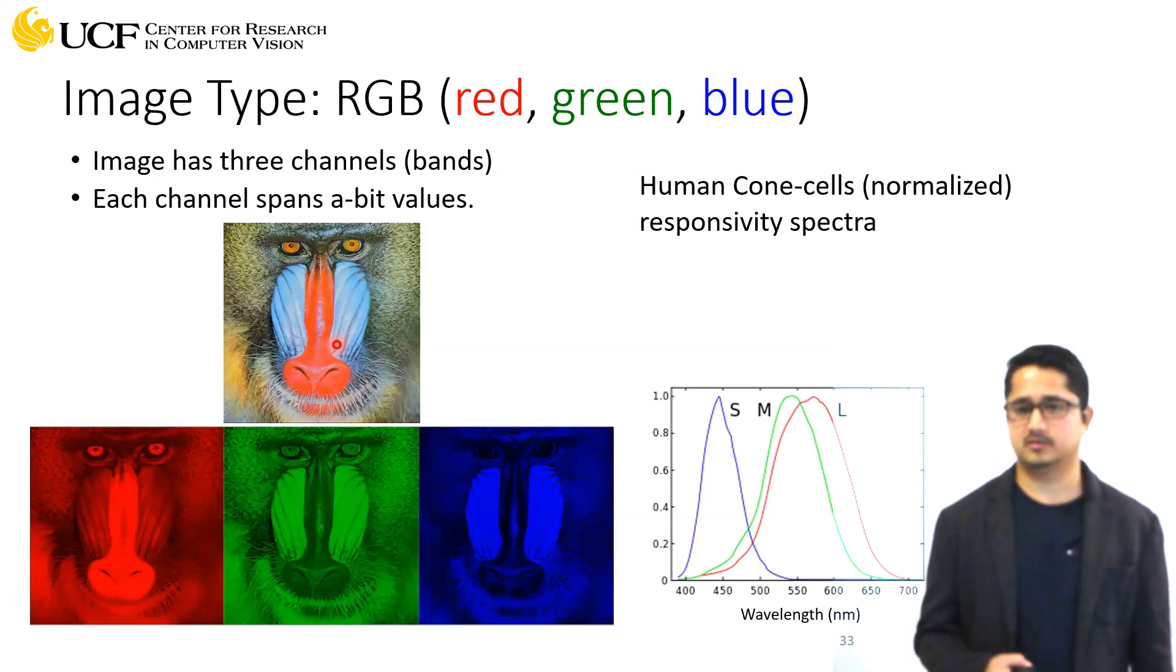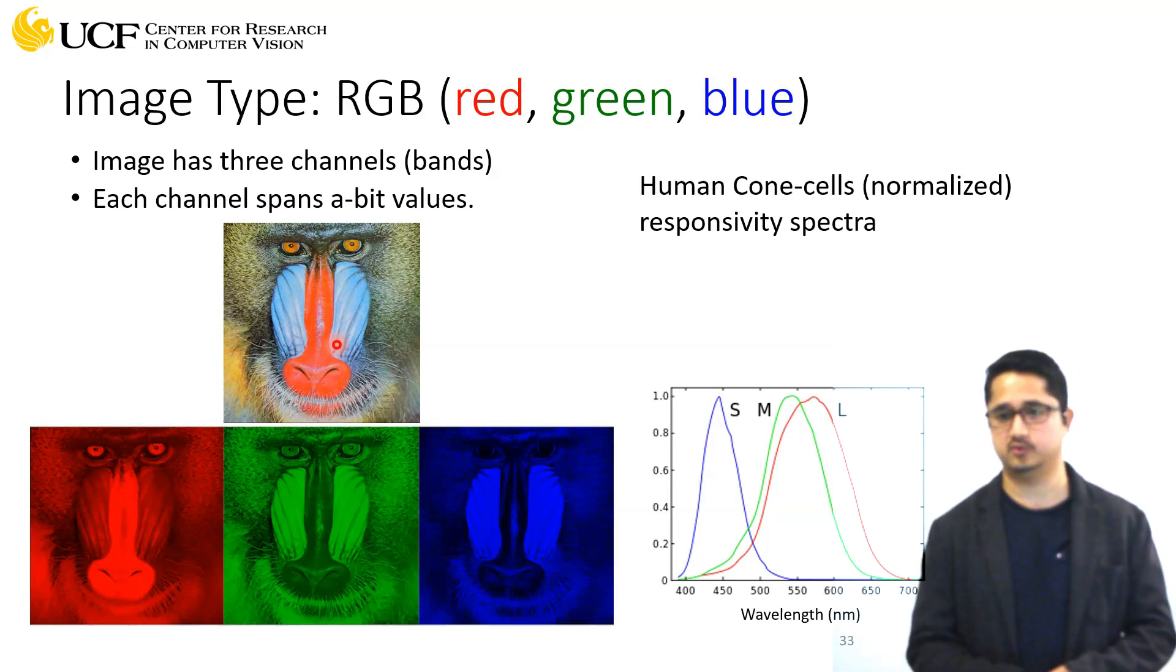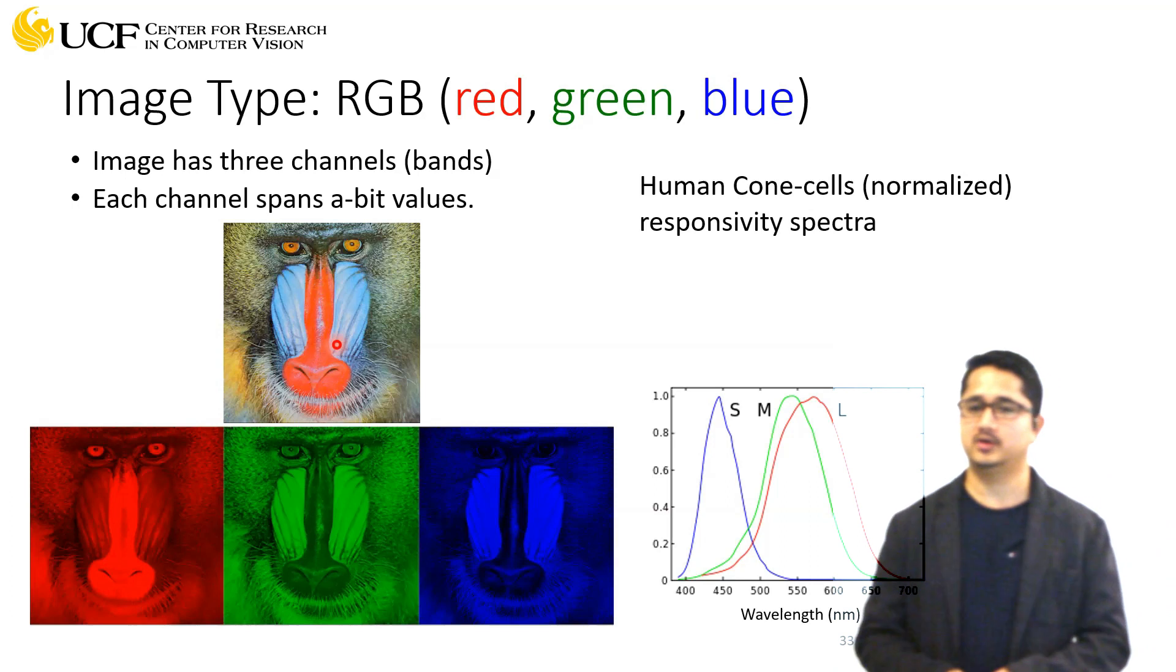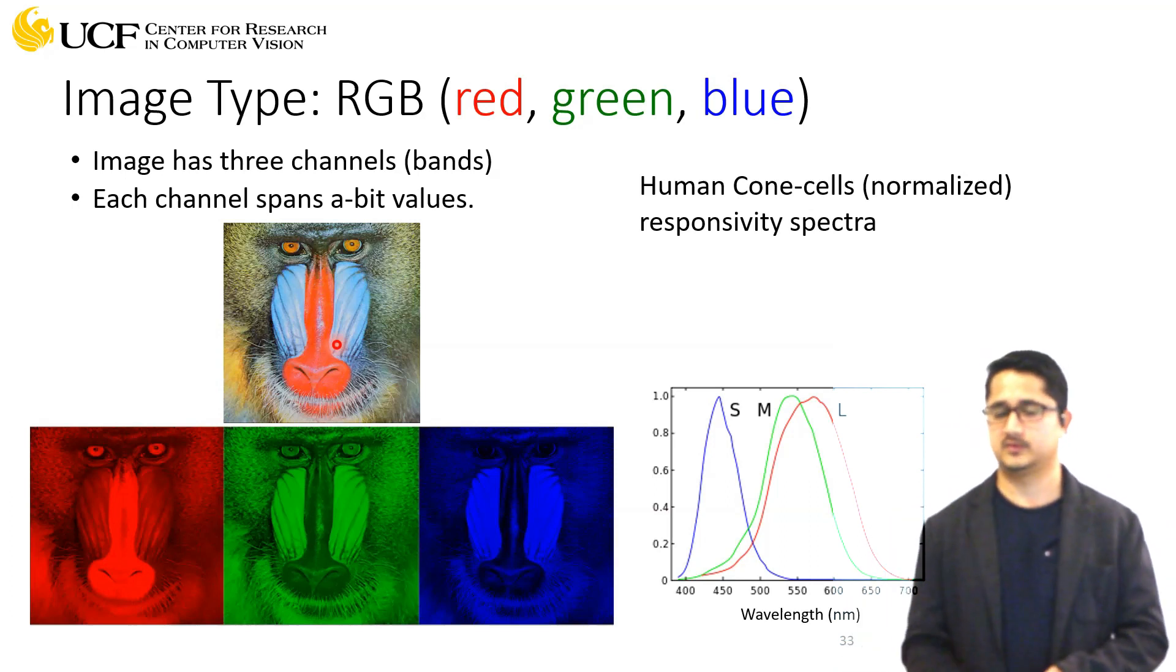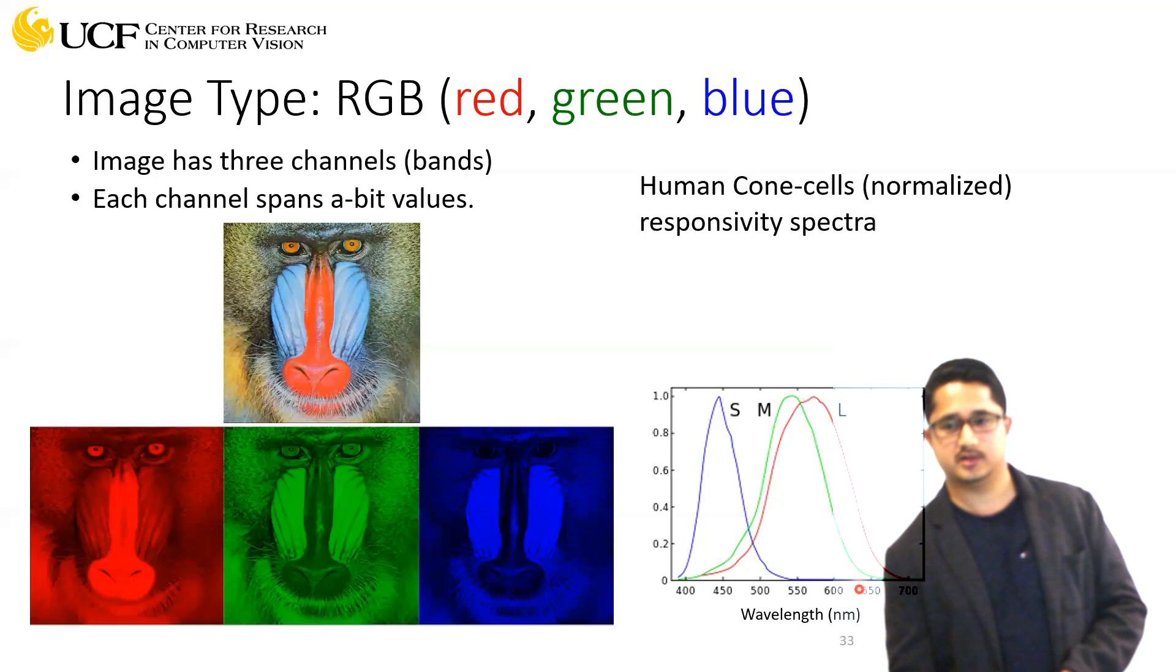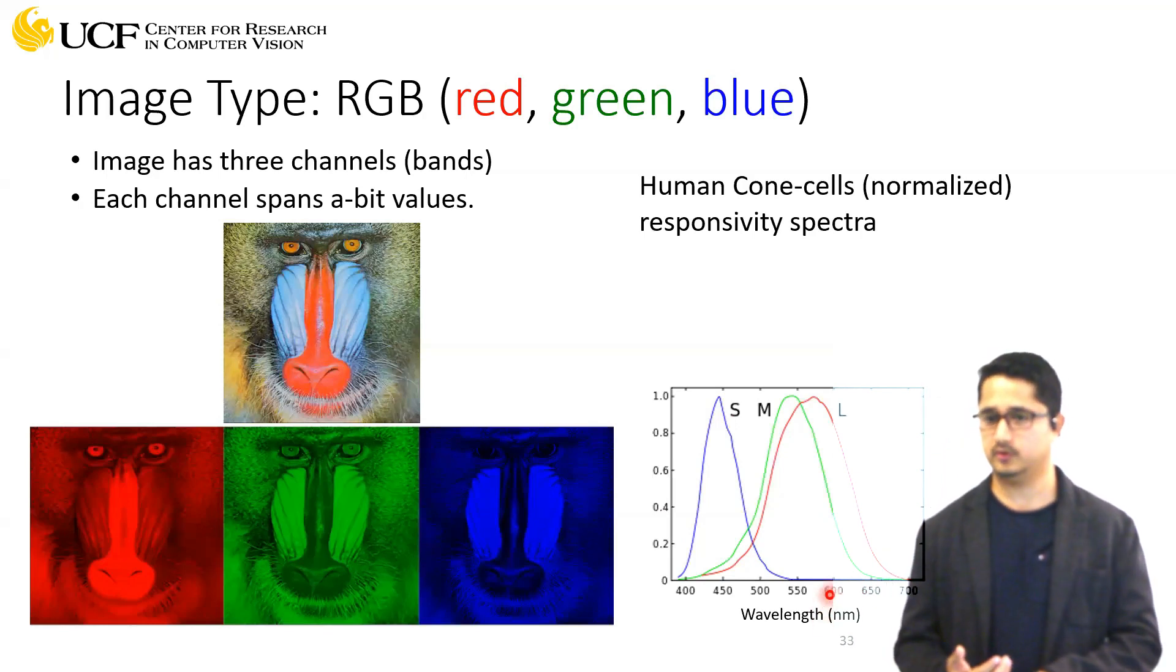Let's understand in more detail how these RGB channels work for us as humans. We have cone cells, and these cone cells correspond to either red, green, or blue.